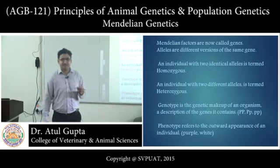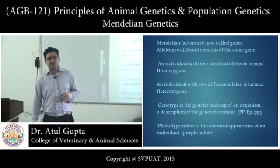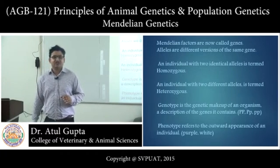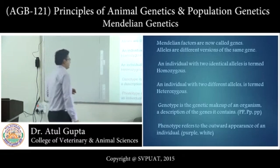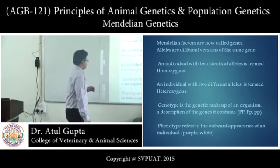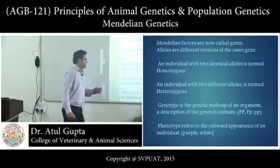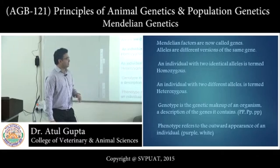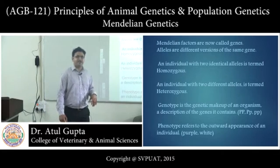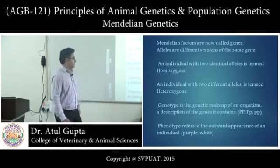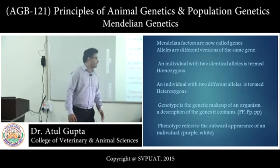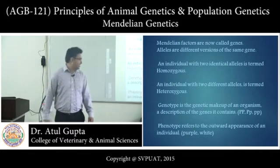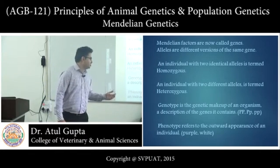An individual with two identical alleles is termed as homozygous, meaning that individual will have identical alleles of a gene. An individual with two different alleles is termed as heterozygous.